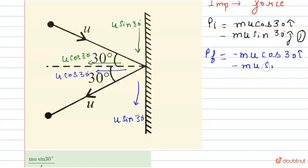minus m u sine 30 degree j cap. This is the second equation.